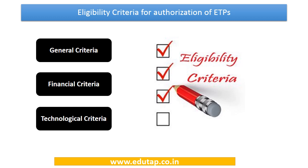These directions have a very detailed criteria with regard to authorization of electronic trading platforms. This criteria has been divided into three points: one is the general criteria, second is the financial criteria, and the third one is the technological criteria.